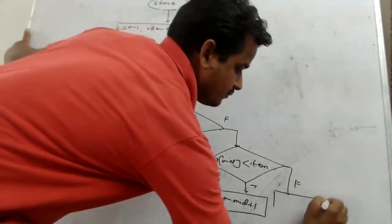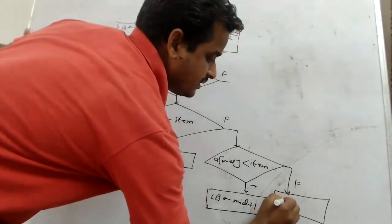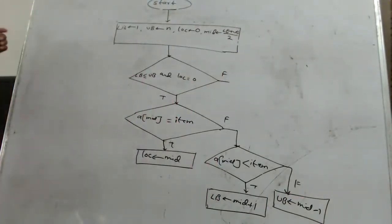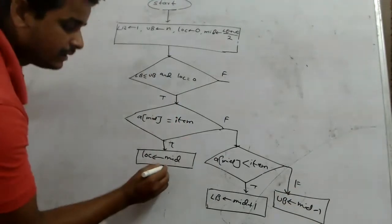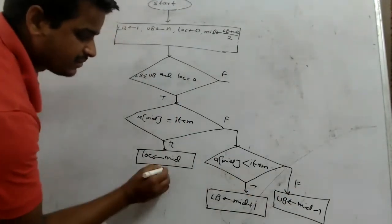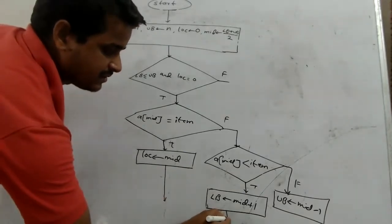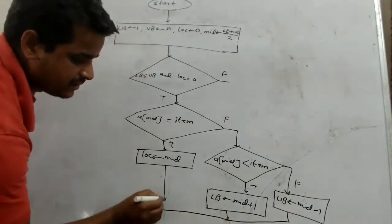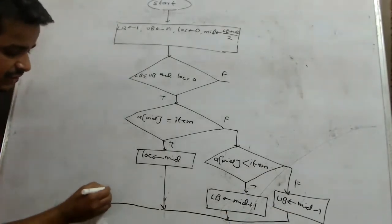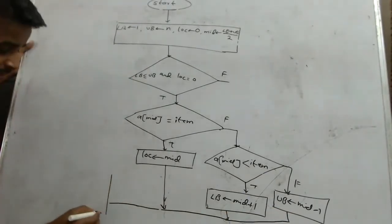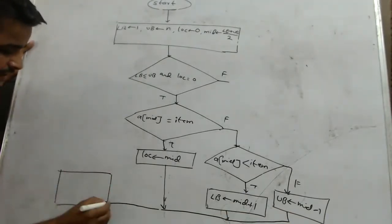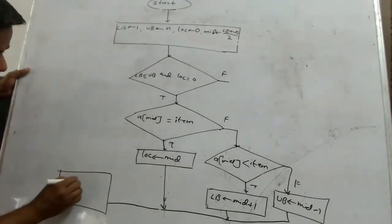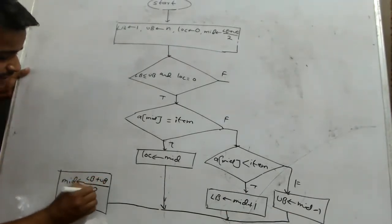और अगर यह condition false है, तो उस case में upper bound update हो जाएगा और उसे assign करेंगे mid minus one। तीनों ही cases में control आएगा loop के last statement पर, जो है: mid calculate होगा फिर से — LB plus UB divided by 2।